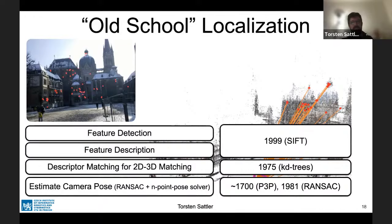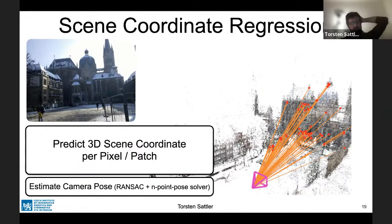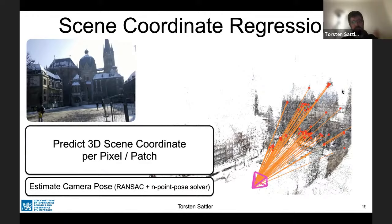This is where scene coordinate regression comes in. The idea is that rather than having an explicit detection-description-matching stage, you train a single CNN that takes a pixel or patch as input and predicts the corresponding 3D point in the world. Once you have those predictions, you get 2D-3D matches and can do pose estimation.